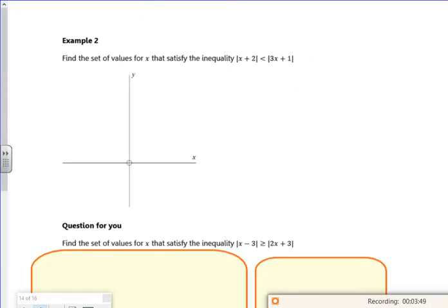Right let's have a look at the second example then. So this time I've got I'm looking where x plus 2 is less than modulus of 3x plus 1. Right, so once again, 3x plus 1 is steeper, so the x plus 2 will be a shallower curve I'm going to draw.